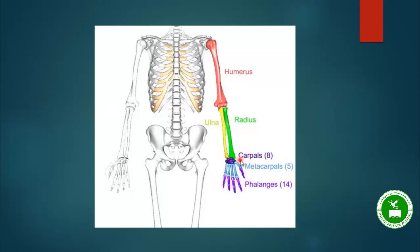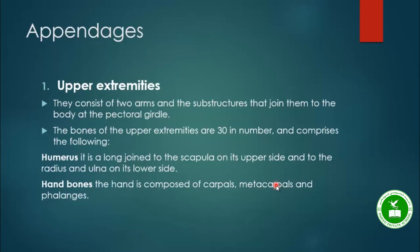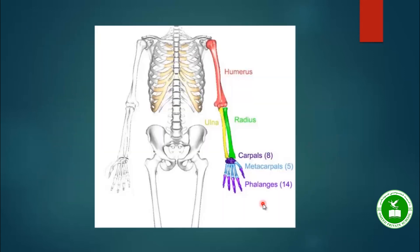The hand bones include the carpals — 8 bones arranged in two rows — the metacarpals, which are 5 in number, and the phalanges, which are the finger bones — 14 in total. The humerus is a long bone jointed to the scapula on its upper side and to the radius and ulna on its lower side.